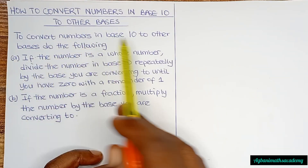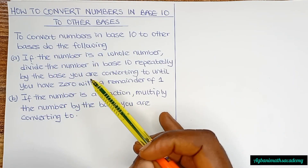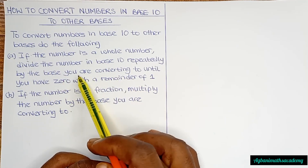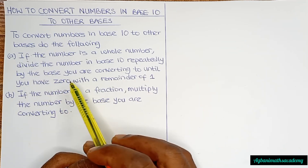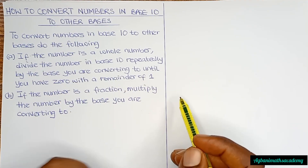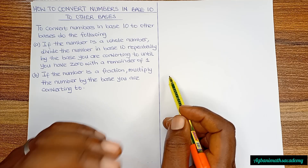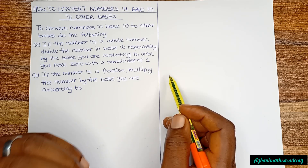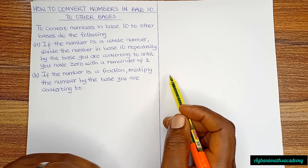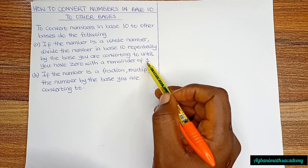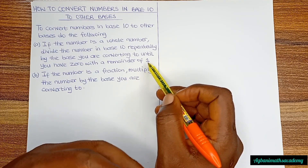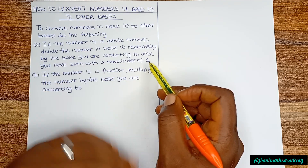To convert numbers in base 10 to other bases, do the following. A: if the number is a whole number, divide the number in base 10 repeatedly by the base you are converting to, until you have 0 with a remainder. Note: if the base you are converting to is not base 2, the remainder might not necessarily be 1 — it might be 1, 2, or any number available for that particular base.